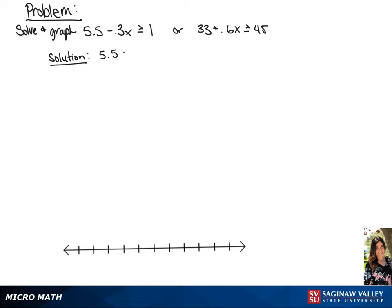We have 5.5 minus 3x is greater than or equal to 1, or 33 plus 6x is greater than or equal to 45.